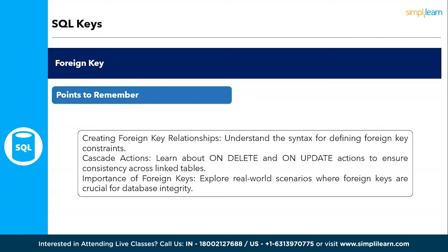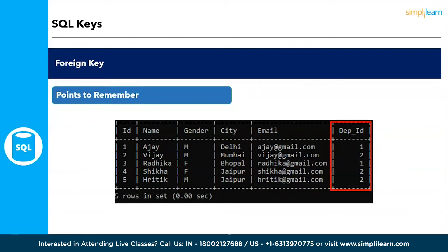When you link two tables based on a primary key, the dependent columns you operate on are called foreign keys. Regarding cascade actions: when you update or delete something in one table, the related table relying on it may also need that update. Unless you use the CASCADE keyword — for example, CASCADE ON DELETE — both tables will have the value deleted. In the example, the foreign keys are department IDs related to the primary key which is the ID.